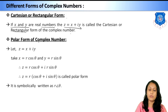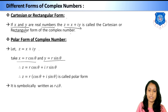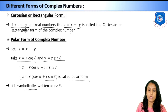The next is the polar form of a complex number. Let z = x + iy. Suppose x = r cos θ and y = r sin θ, and substitute. So z = r cos θ + i·r sin θ. Taking r common, z = r(cos θ + i sin θ). This is the polar form of a complex number, symbolically written as r∠θ.